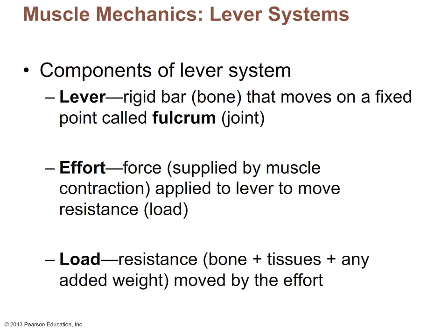Now we're going to move on to lever systems, which deal with the physics of muscle contraction. The components of a lever system consist of a lever or rigid bar — in this case a bone — that moves on a fixed point called a fulcrum, which is a joint. The effort is the force applied to the lever to move a resistance known as the load. The effort is provided by the contraction of skeletal muscles, and the load is what we're trying to move — which can be an external object or even just holding our own head up.